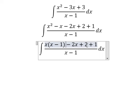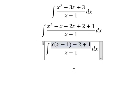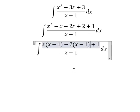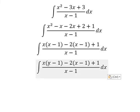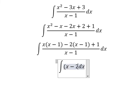1. We can do factorization by factoring out terms, and that is x minus 1. So we have x(x - 1) minus 2(x - 1) plus 1, all divided by x - 1. Simplifying, we have x minus